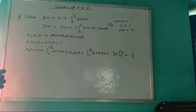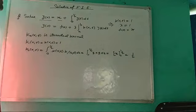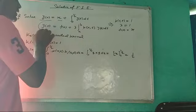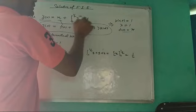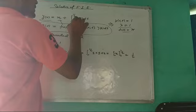The question is: solve y(x) = x + integral from 0 to 1/2 of y(t) dt. We compare this with the general Fredholm integral equation. By comparison, we observe that f(x) = x, λ = 1 (this is the eigenvalue), k(x,t) = 1, and the limits are a = 0 and b = 1/2.